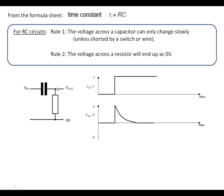But Rule 2 says you're going to end up at 0 volts across the resistor. So it jumps up by 5 volts and then falls down to 0 volts.